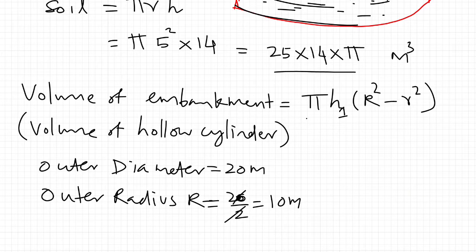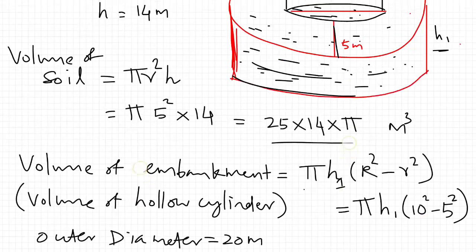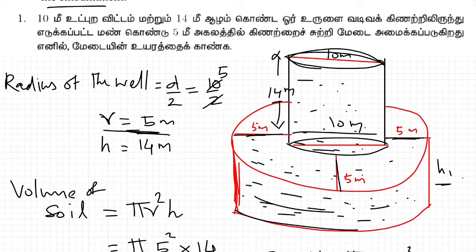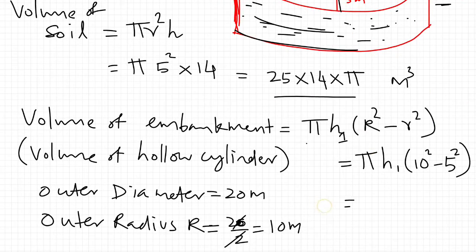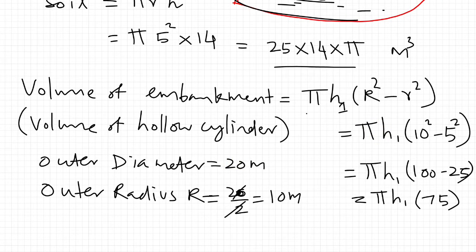So volume of embankment = π × h1 × (R² − r²) = π × h1 × (10² − 5²) = π × h1 × (100 − 25) = π × h1 × 75 meter cube.